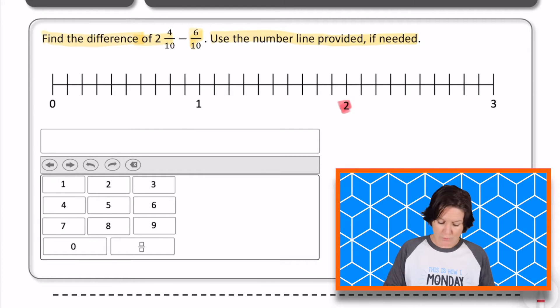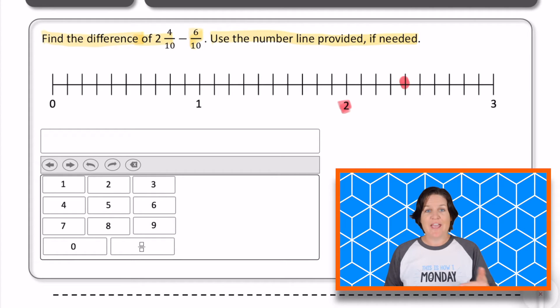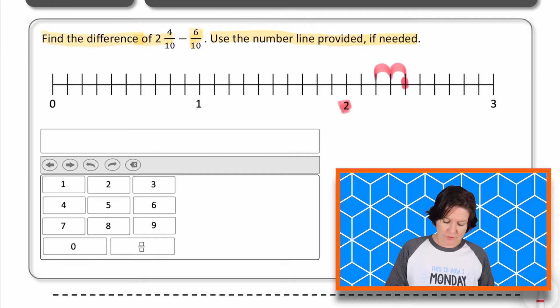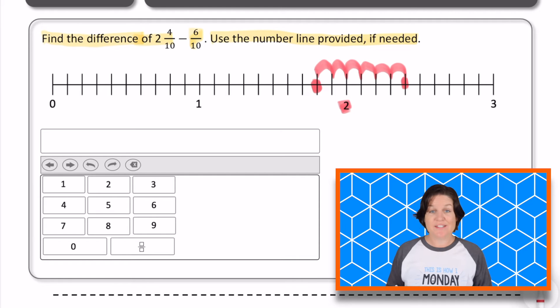So here's two, which means this would be two and one tenth, two and two tenths, two and three tenths, two and four tenths. So we're starting right here. Okay, and then I need to subtract six tenths, which means that we need to make six one tenth hops going backwards, which would be one tenth, two tenths, three tenths, four tenths, five tenths, six tenths. So this is where the difference is.